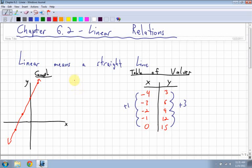Then I have a linear relation. So both these are examples of linear relations. So that's a graph and a table of values.